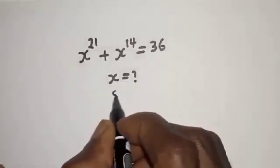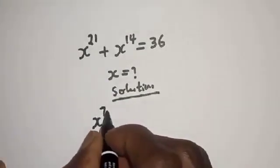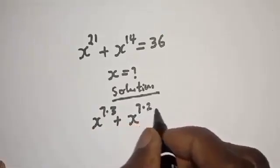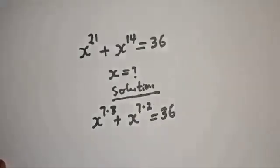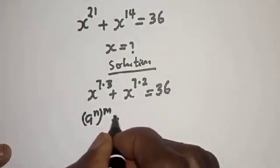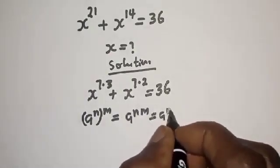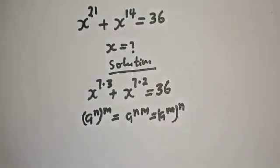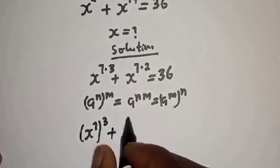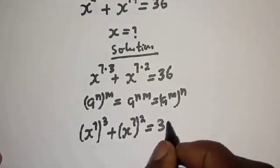What is the value of s? The equation s raised to power 21 plus s raised to power 14 equals 36. We can rewrite s²¹ as s raised to power 7 multiplied by 3, and s¹⁴ as s raised to power 7 multiplied by 2. Using the exponential rule that a raised to power n to the power of m equals a raised to power nm, this becomes s raised to power 7 to the power of 3 plus s to the power of 7 squared equals 36.